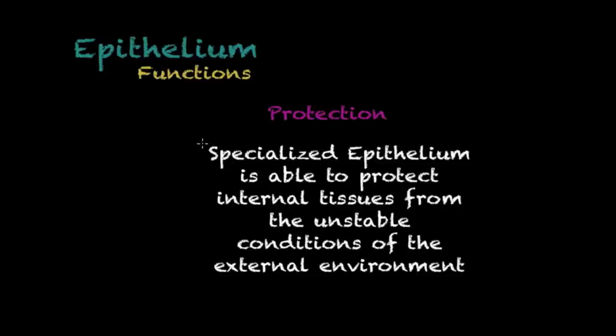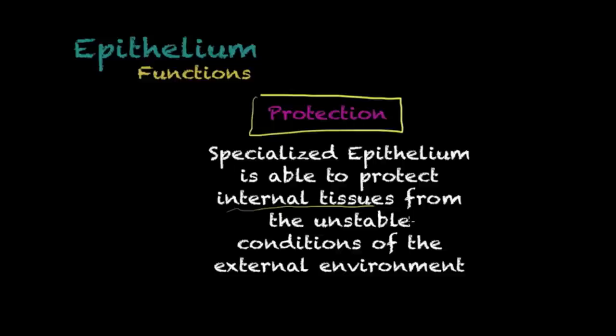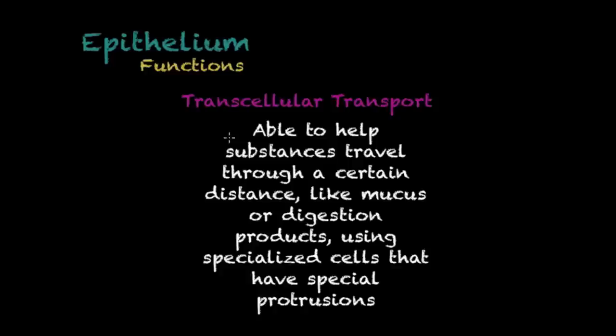Because the epithelium is one of the tissues in direct contact with the external environment, it has to have a protective function. Specialized epithelium is able to protect internal tissues — especially connective tissue, which we will discuss in a different tutorial — from the unstable conditions of the external environment. One of the main examples of this is your skin, your largest organ, which is mainly comprised of epithelium and whose main function is to provide a barrier between your internal tissues and the external environment.